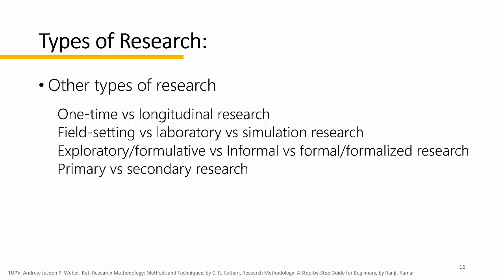Primary research is research that is collected first-hand and is original to the person using it. When conducting primary research, the goal is to answer questions that have not been asked before — it can be a survey, observation, or interview. This type of research tends to be more time-consuming and can be very costly. Secondary research should be done first before primary research because it gives you an advantage in determining what information is not already available or what information is lacking.